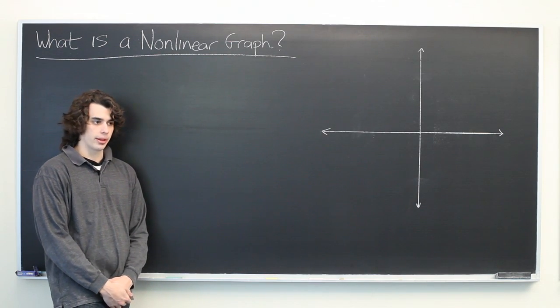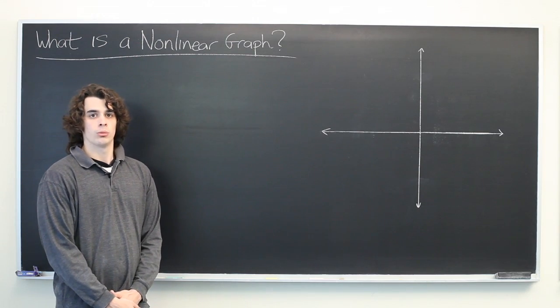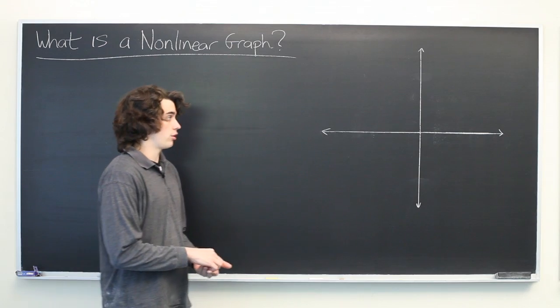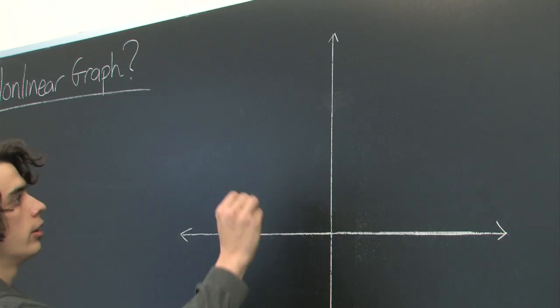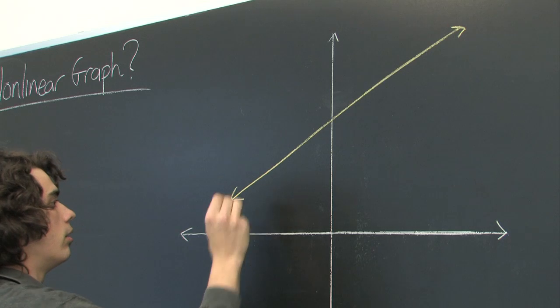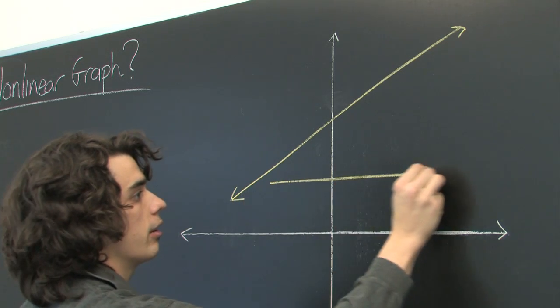Before we answer that, it's helpful to answer the opposite question. What is a linear graph? Quite simply, it's any graph of a straight line. It might look something like this, or it might be a horizontal line.